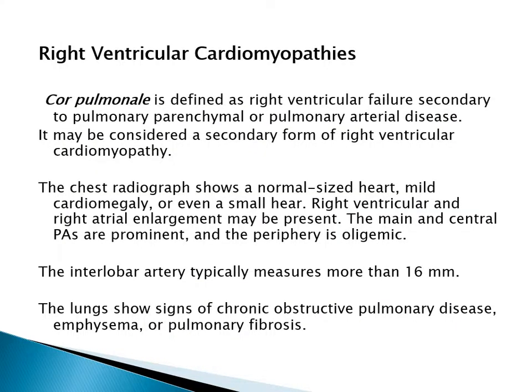Right ventricular cardiomyopathy, or cor pulmonale, is defined as right ventricular failure secondary to pulmonary parenchymal or pulmonary arterial disease. The chest radiograph shows normal sized heart, mild cardiomegaly, or even a small heart. Right ventricular and right atrial enlargement may be present. The main and central pulmonary arteries are prominent and the periphery is oligemic. The interlobar artery typically measures more than 16 mm. The lungs show signs of pulmonary diseases such as obstructive airway disease, emphysema, or fibrosis.